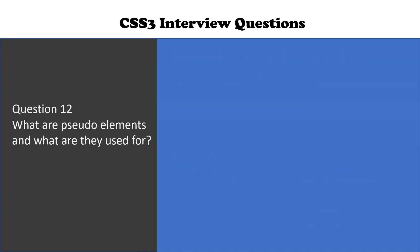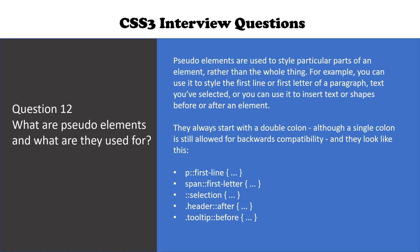The next question is: what are pseudo elements and what are they used for? Pseudo elements are used to style particular parts of an element rather than the whole thing. For example, you can use it to style the first line or first letter of a paragraph, text that you have selected, or you can use it to insert text or shapes before or after an element. They will start with a double colon, although a single colon is still allowed for backwards compatibility. So we have a p tag with a double colon selecting the first line of the p tag.